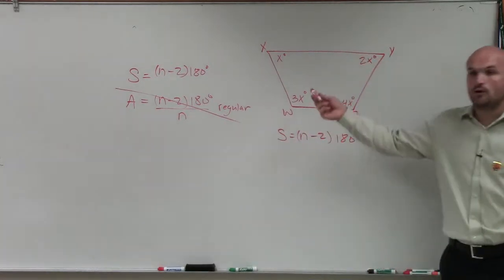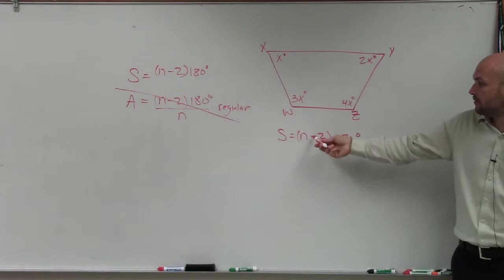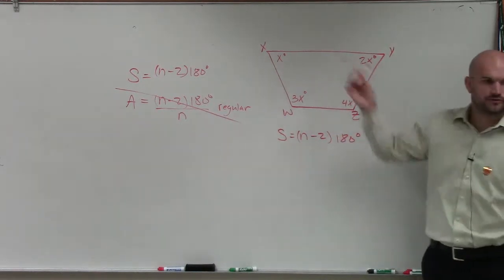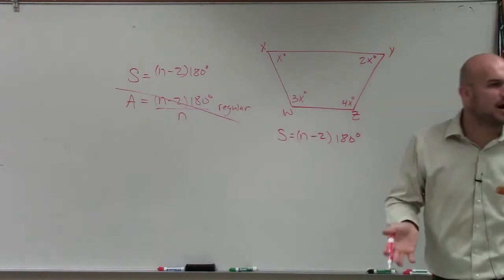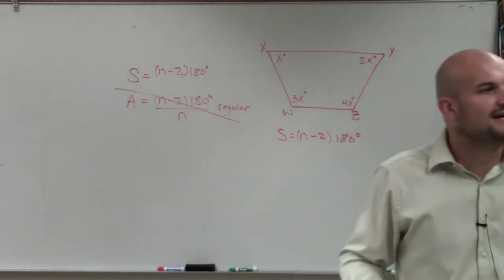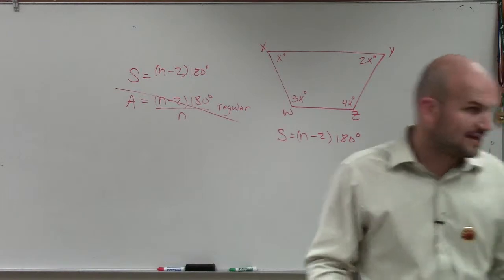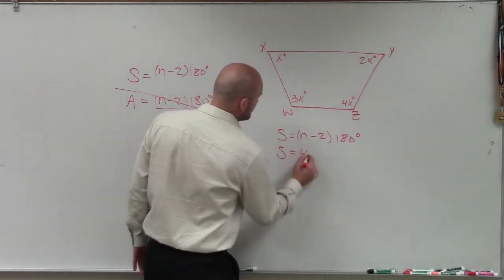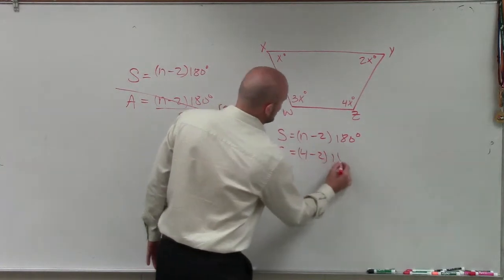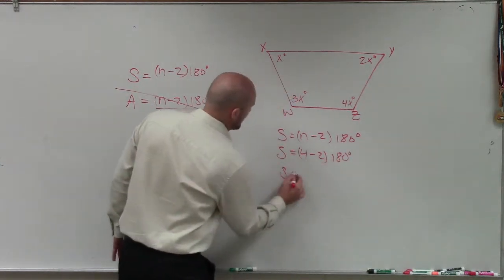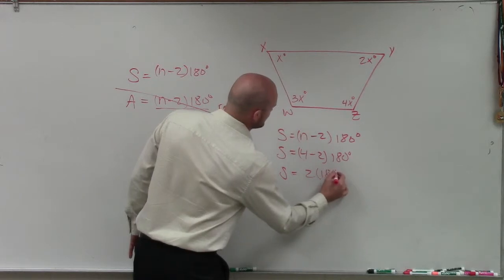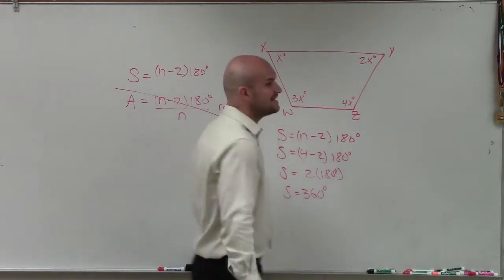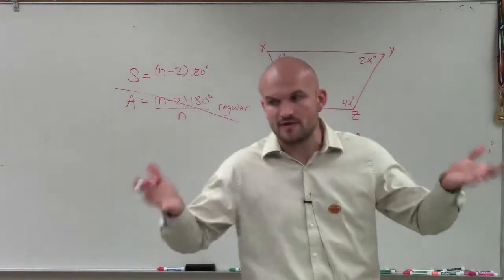Now, do we know what the number of sides are? Yeah. There's 1, 2, 3, 4, right? So let's find the sum. And what the sum represents is the addition of every single one of these angles. So we need to figure out the sum first. So I do S equals 4 minus 2 times 180. Therefore, S equals 2 times 180 degrees. So S equals 360 degrees. Now remember, that's the sum of all of the angles.